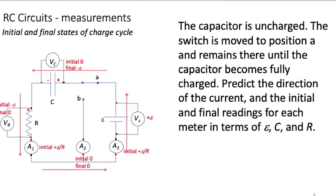Ammeters 1 and 3 have the same meter reading because current is the same everywhere in this circuit. In both cases, current enters the red lead and exits the black, so the readings will be positive. Because the voltage across the resistor has magnitude epsilon when the switch is first closed, Ohm's law tells us that the initial current through the resistor must be epsilon divided by R. The readings of these ammeters will approach zero as current is proportional to the potential difference across the resistor — as V sub R approaches zero, so does the current.